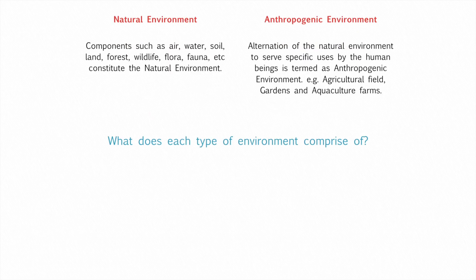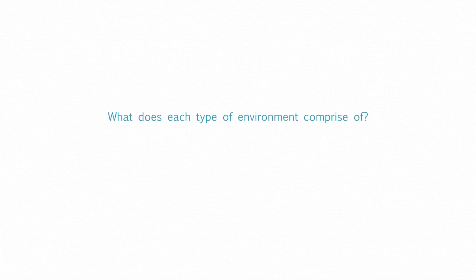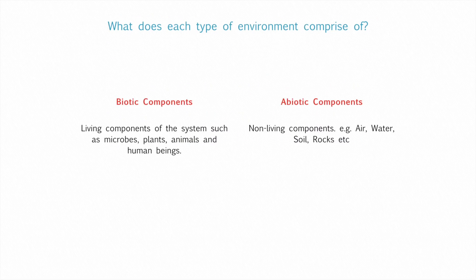All these environments consist of two basic components: biotic components and abiotic components. Biotic components are the living components of such a system, like microbes, plants, animals etc. Abiotic components are non-living components like air, water, soil, rocks etc.